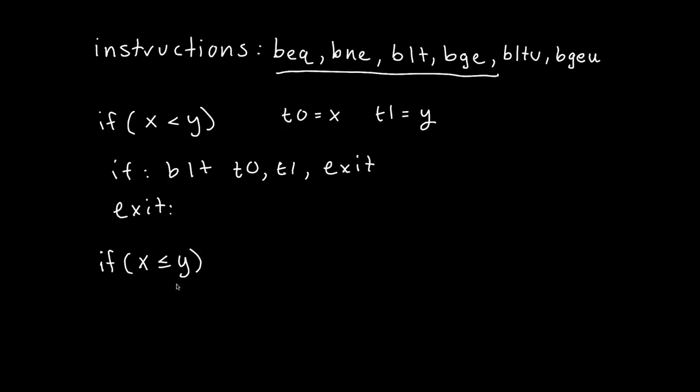This can be accomplished, and maybe you can already see it. But what if we said branch greater or equal to, if Y is greater than or equal to X? And so if you just swap these two values around, it would work. So again, just keeping the idea that X is T0 and Y is T1, we can say if branch greater or equal to T1, T0, exit.